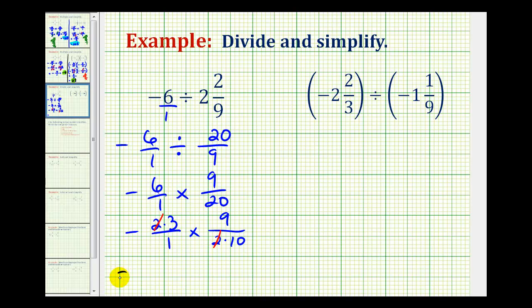Now we can go ahead and multiply. We have a negative times a positive, so that's negative. The numerator would be three times seven, which is 27. The denominator would be one times 10, which is 10.